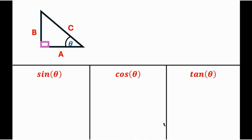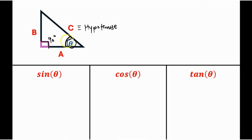For any right triangle, you need to determine the names of the three sides depending on your angle of interest. The side opposite the 90-degree angle is the hypotenuse. The side opposite your angle of interest is called the opposite side — in this triangle that is side b — and side a, which is adjacent to the angle of interest, is called the adjacent.